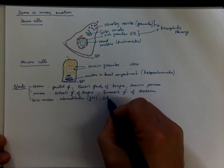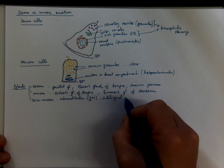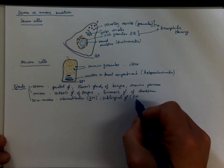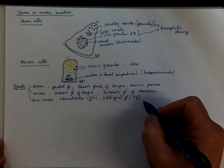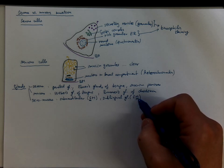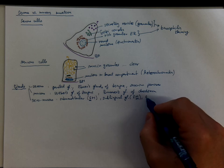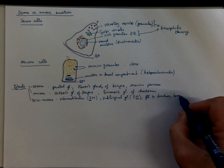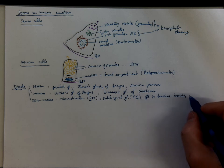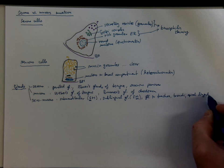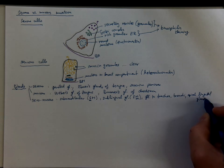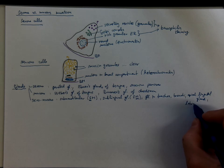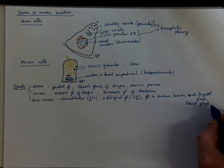Or the sublingual gland, which is also seromucous, but more mucous than serous. The fraction of mucous units is larger than the fraction of serous units. Or the glands in trachea, in bronchi, the epiglottal gland, the labial gland, etc.